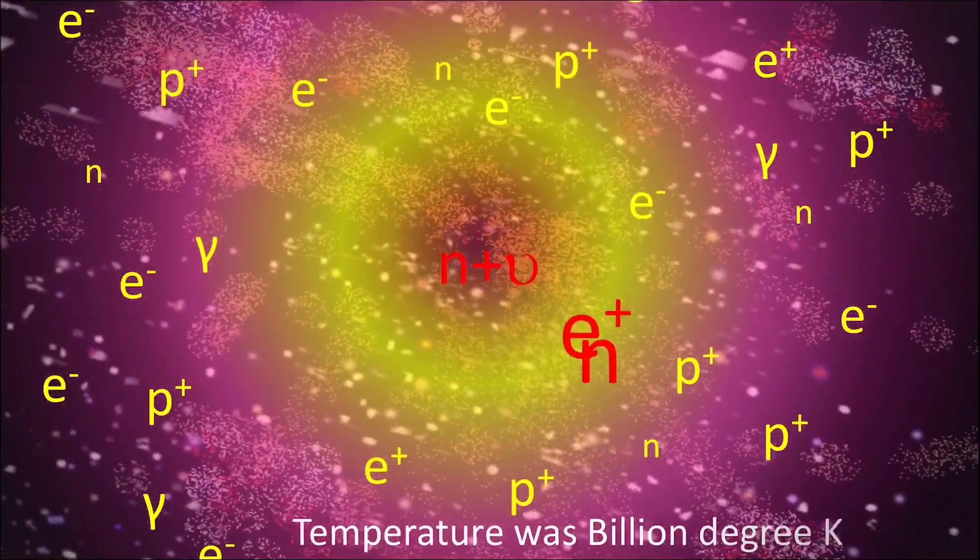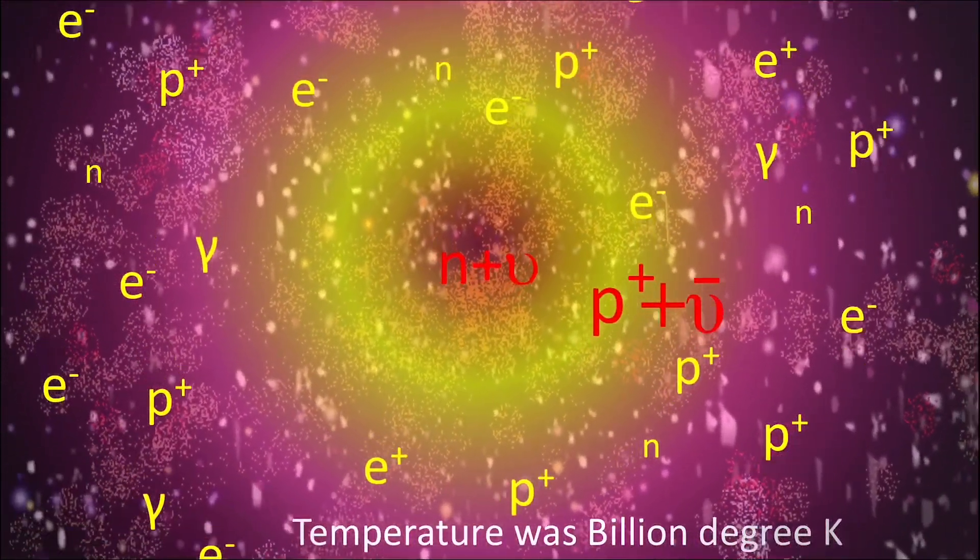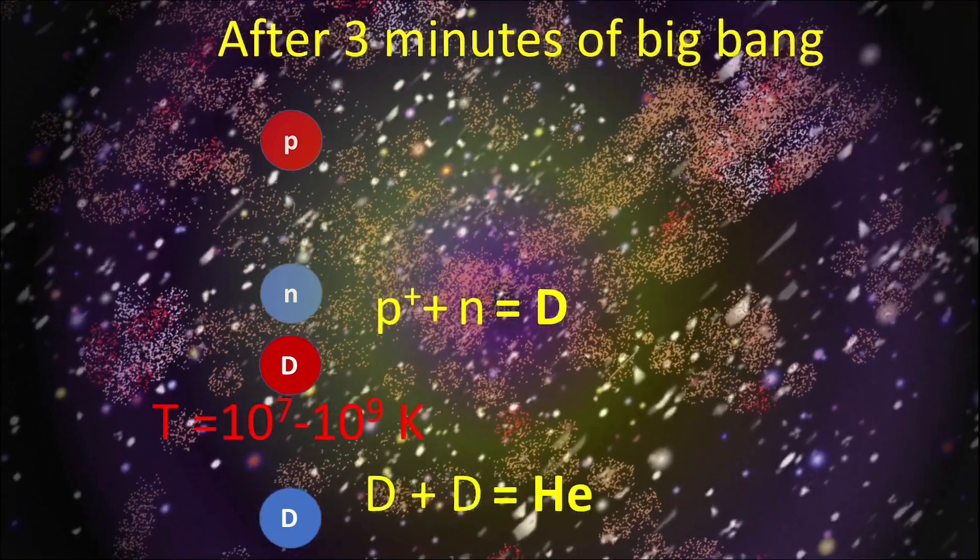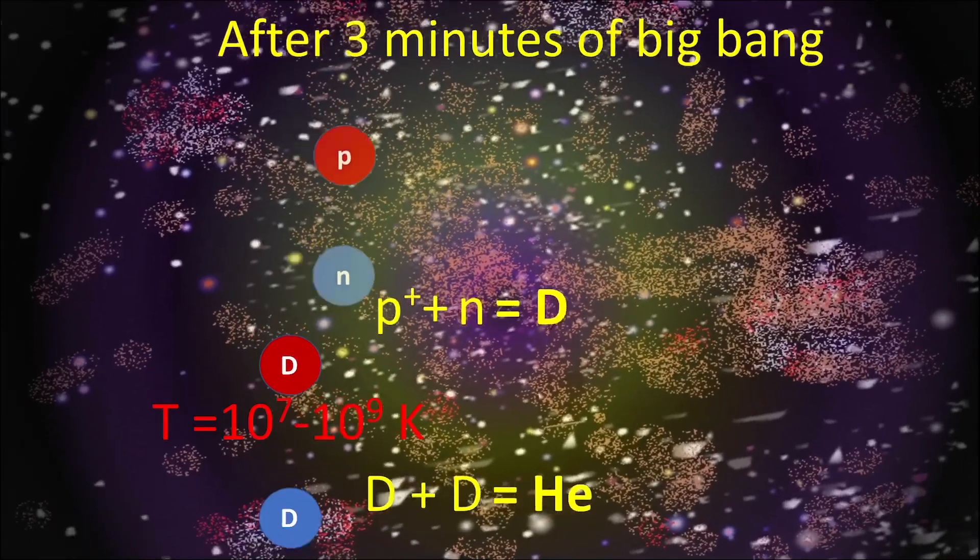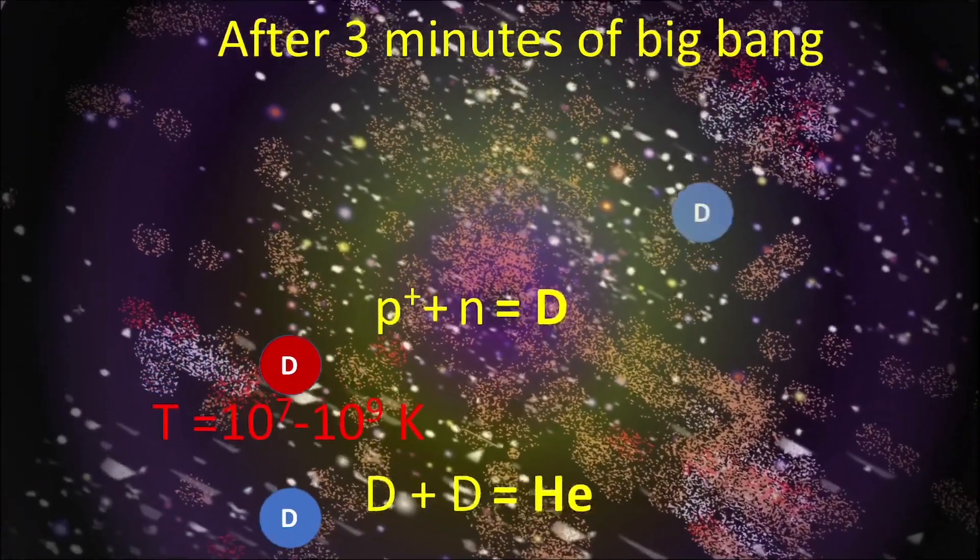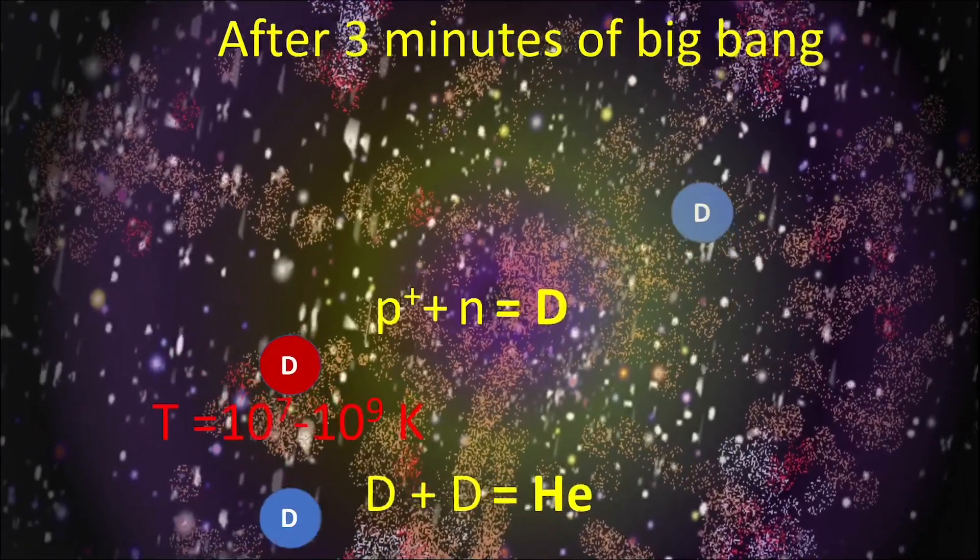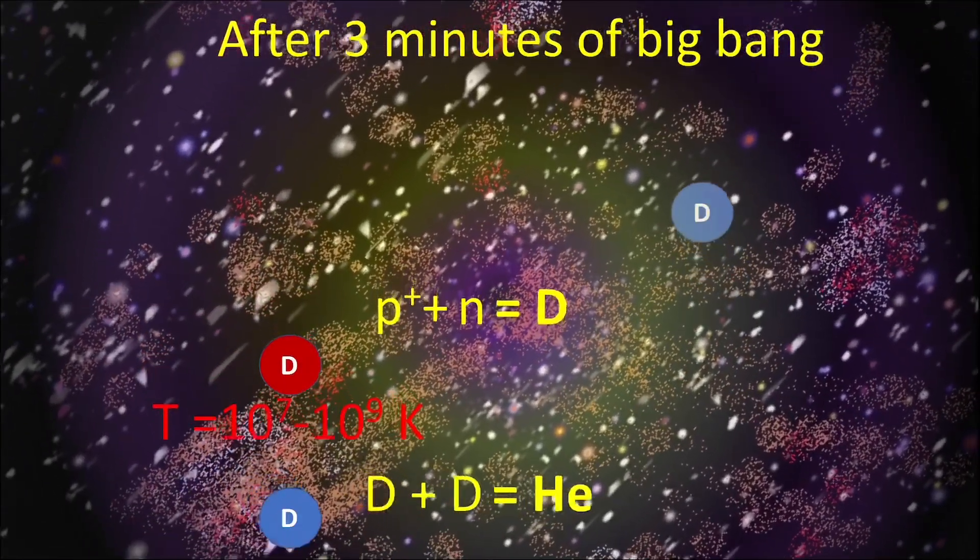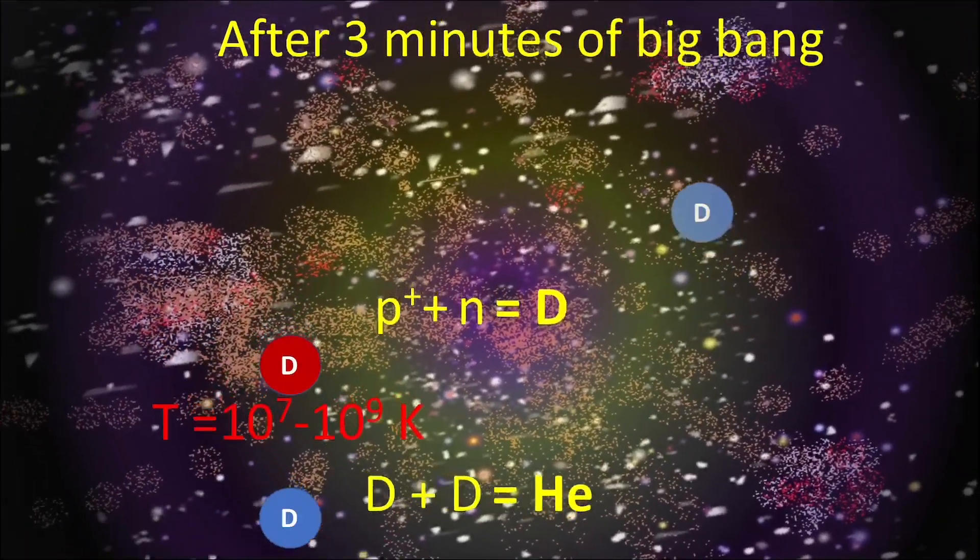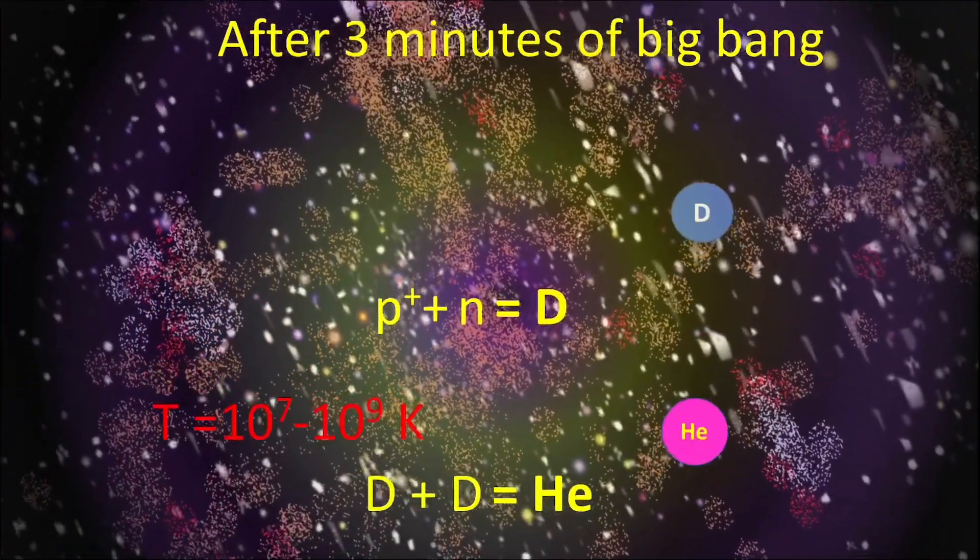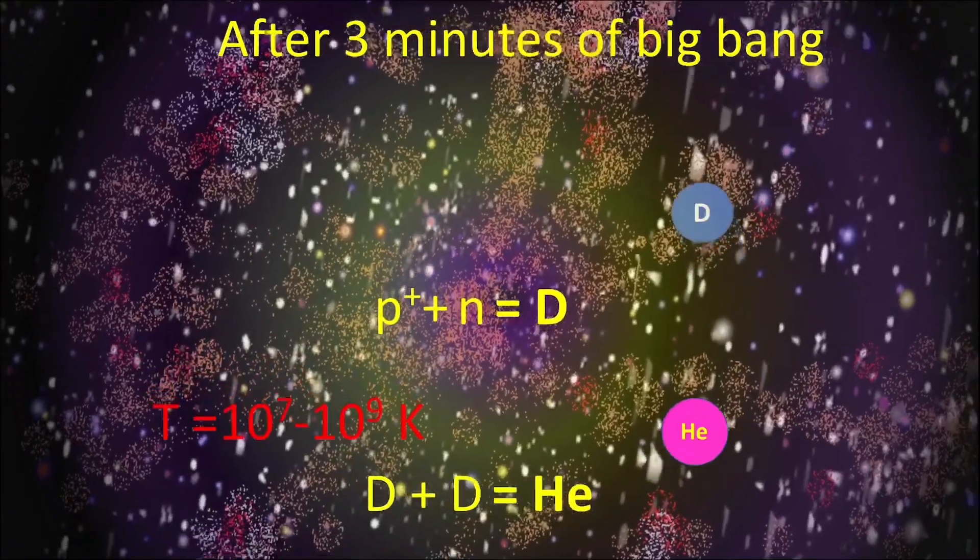Within the first three minutes of the Big Bang, as the universe was expanding, the temperature cooled down so that the collision between proton and neutron formed deuterium, which is an isotope of hydrogen. The temperature at this stage was so high that fusion reactions could take place. This resulted in the formation of light elements like hydrogen, helium, lithium, and beryllium.